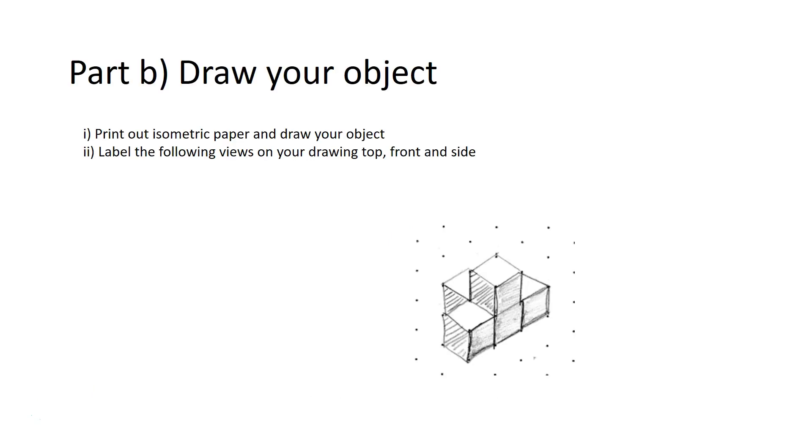Then we're going to print out some isometric paper and we're going to draw it. So I've done a drawing of my isometric objects and we need to label the views top, front, and side. So there's our top, there's our side, and there's our front.